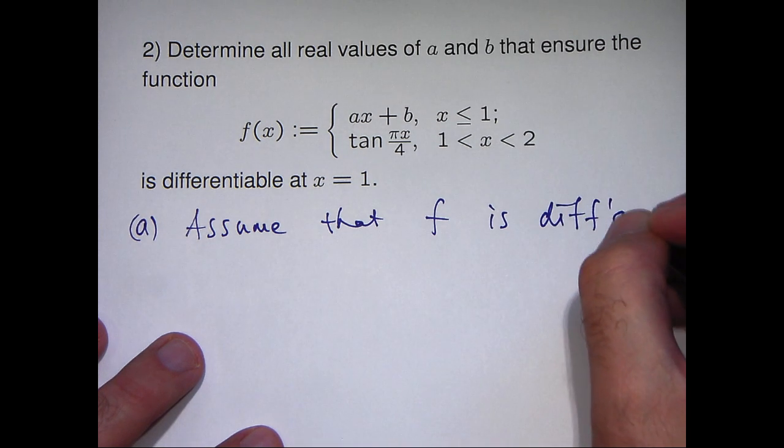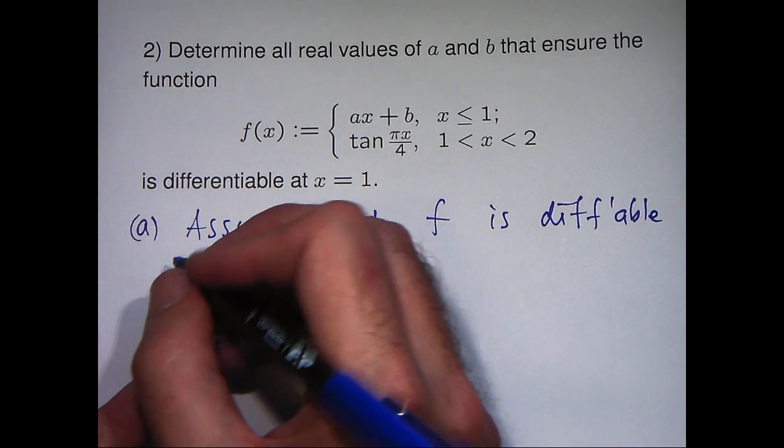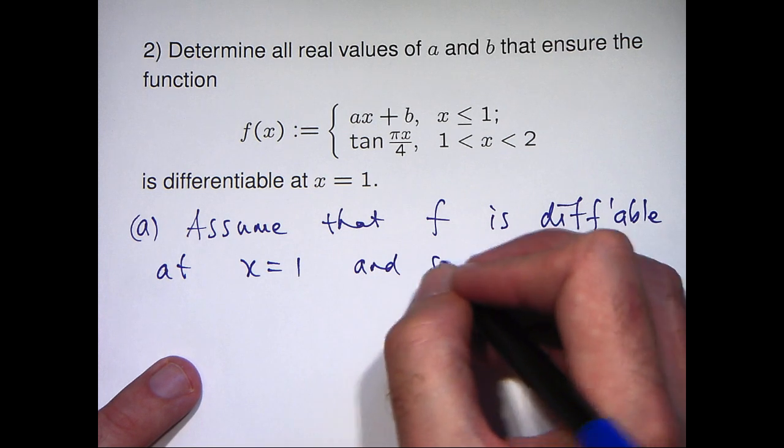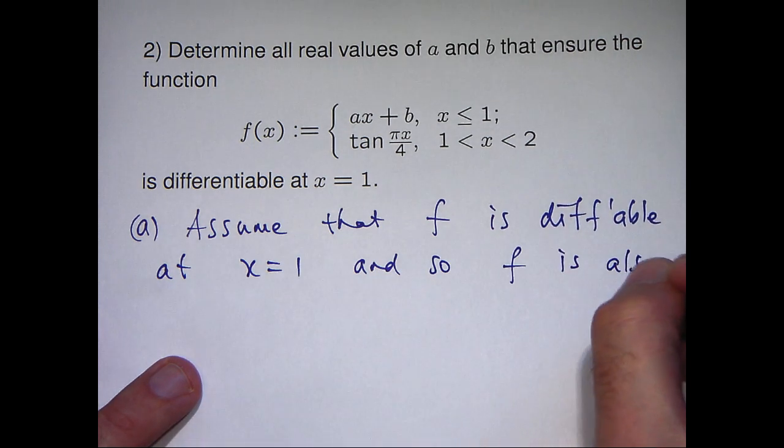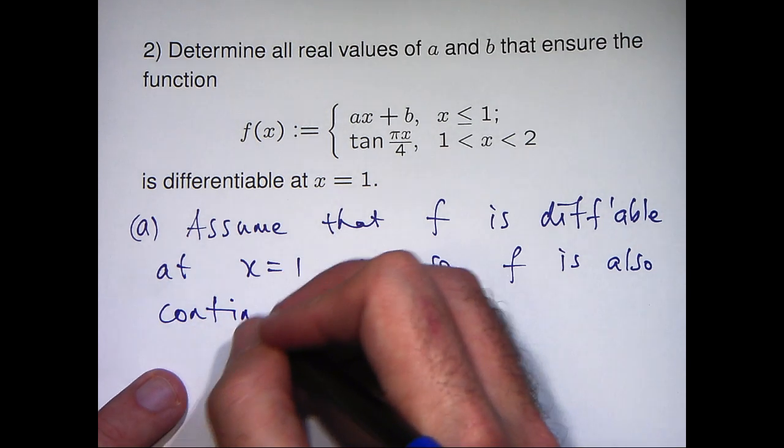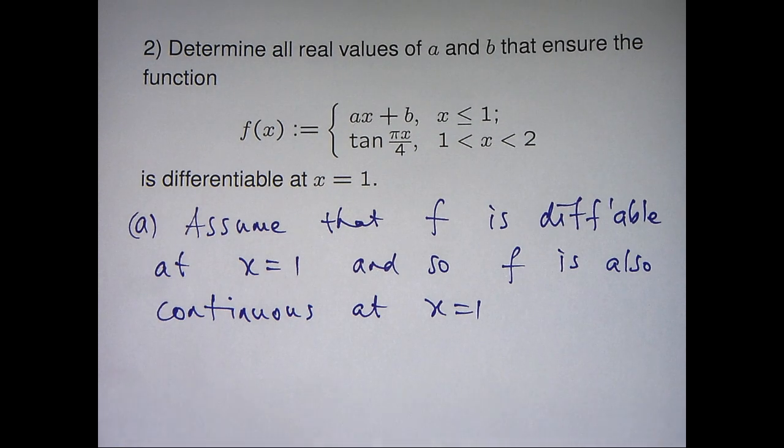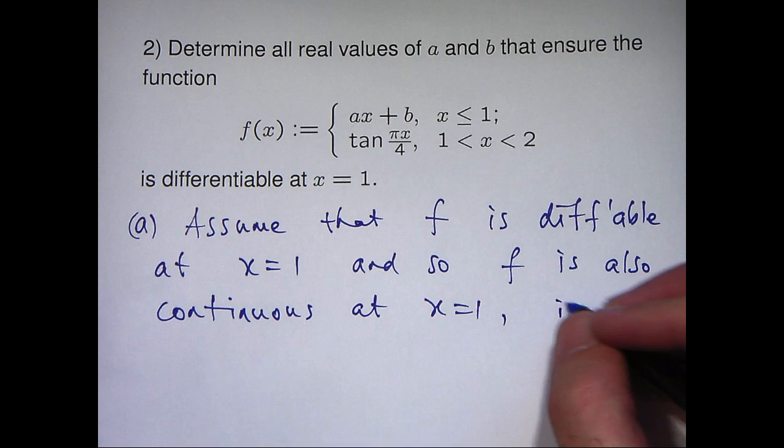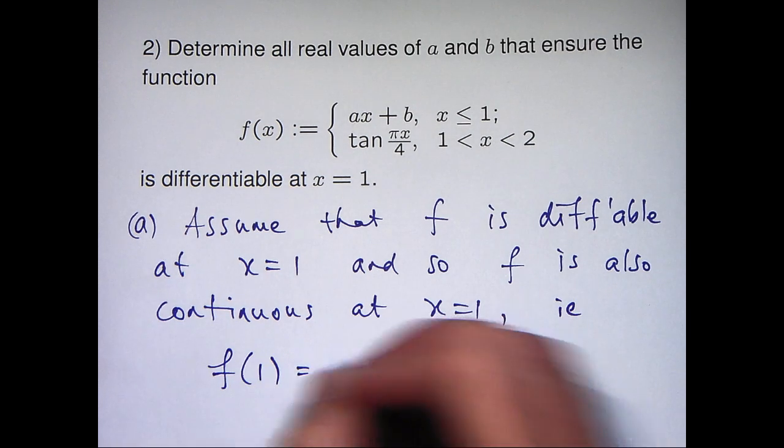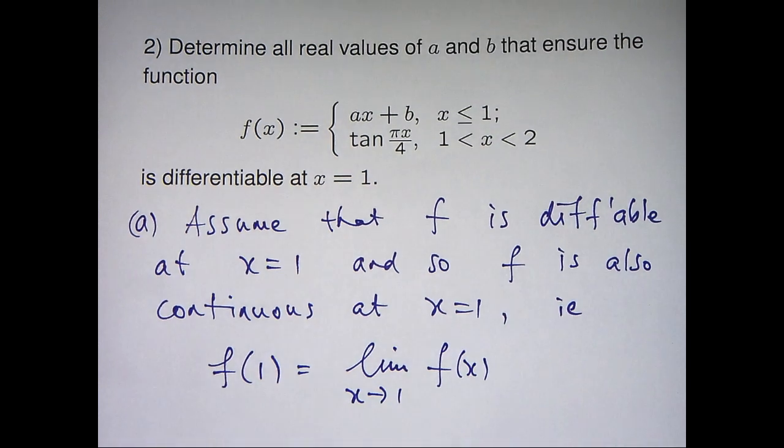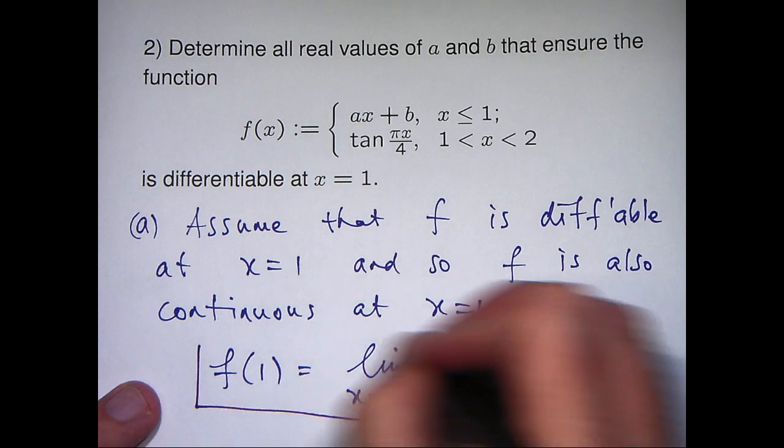The first part actually involves continuity because we know that a differentiable function must be continuous. So let's assume that our function is differentiable at x equals 1 and so f is also continuous at x equals 1. Let's think back to the limit condition or the limit definition of continuity.